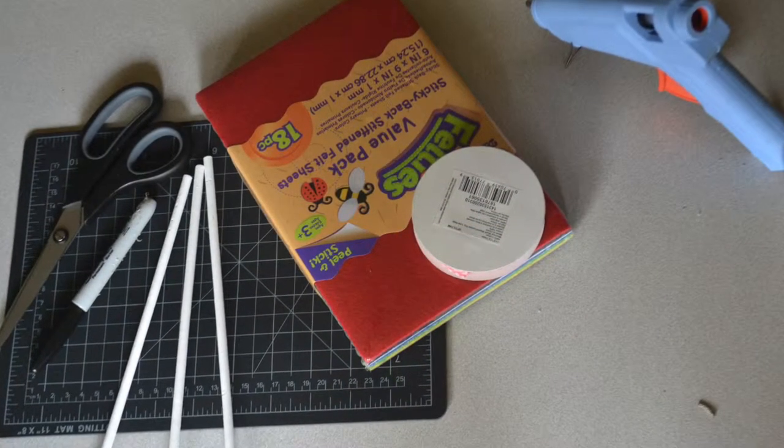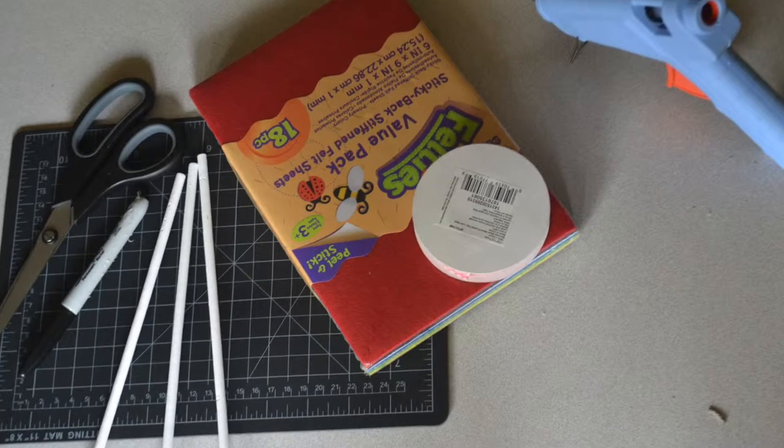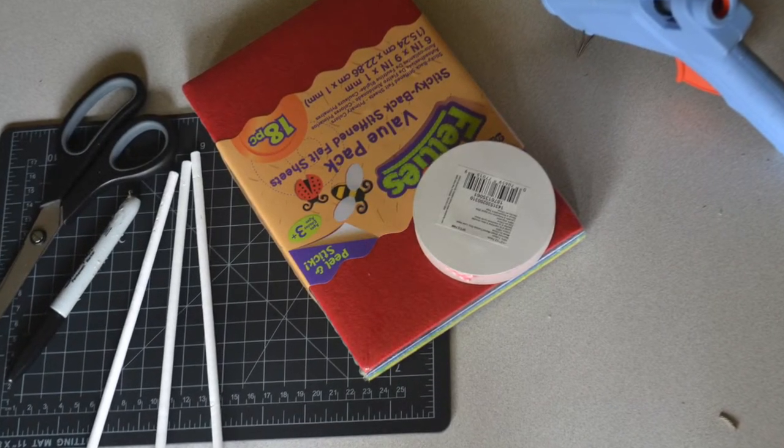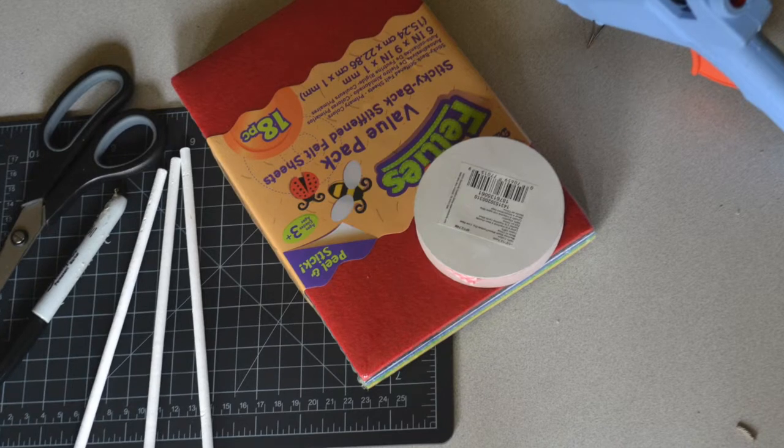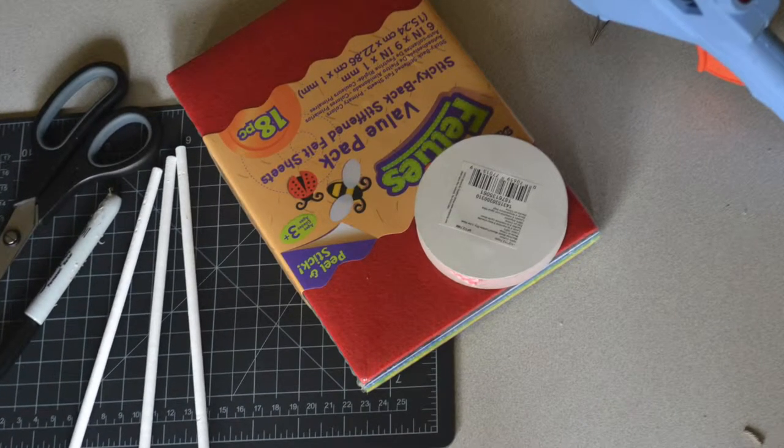What you're going to need for this project is different colors of stiffened felt, a collection of wooden dowels, a pair of scissors, a hot glue gun, a sharpie, and a cutting board. So let's go ahead and get started.